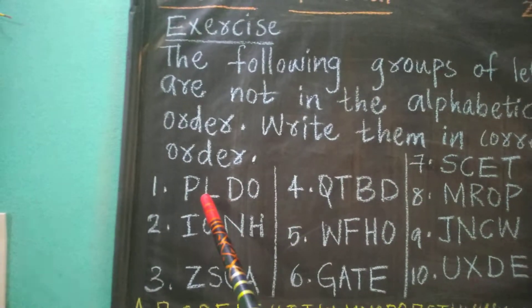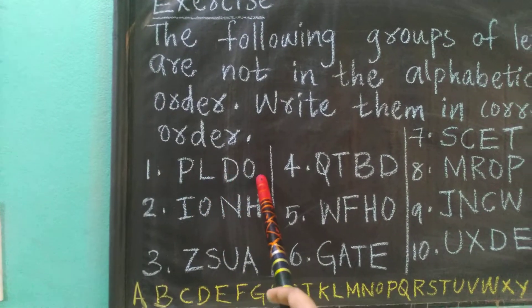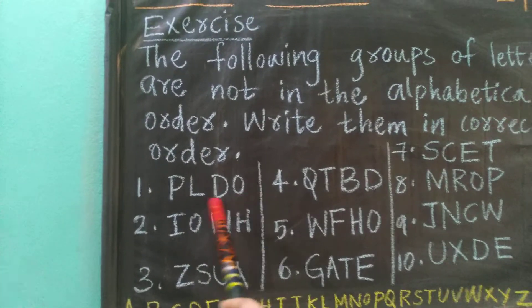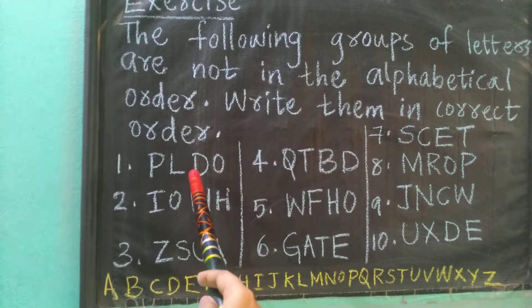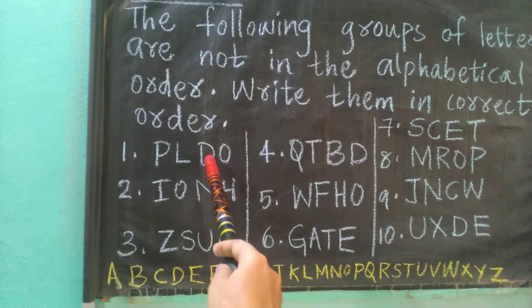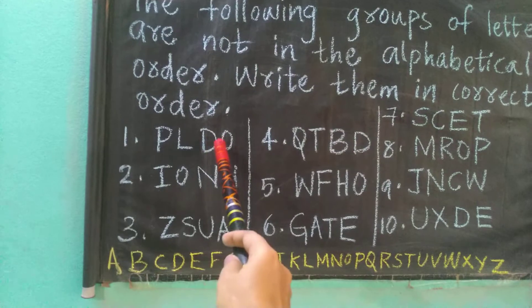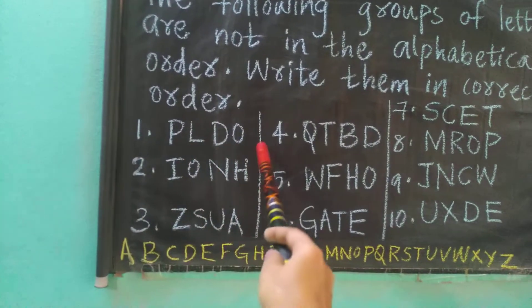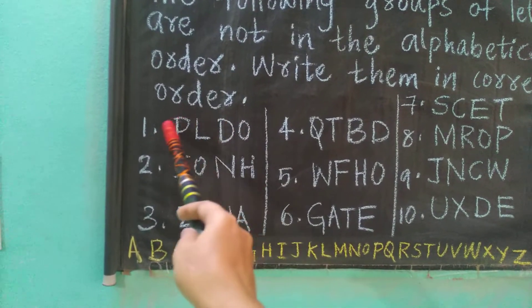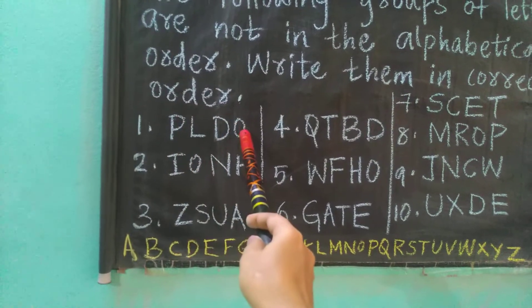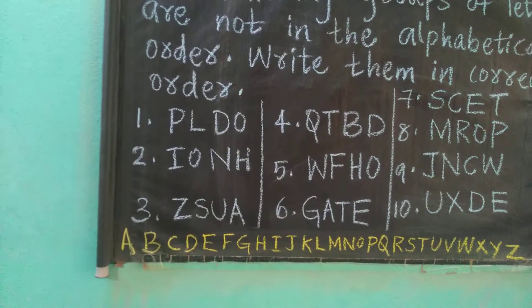For example, the first question: I wrote P, L, D, O. This is not in perfect order. I am asking you now to write this in perfect order. How will you write? These are the 4 letters. Check which letter will come first in the alphabetical order.